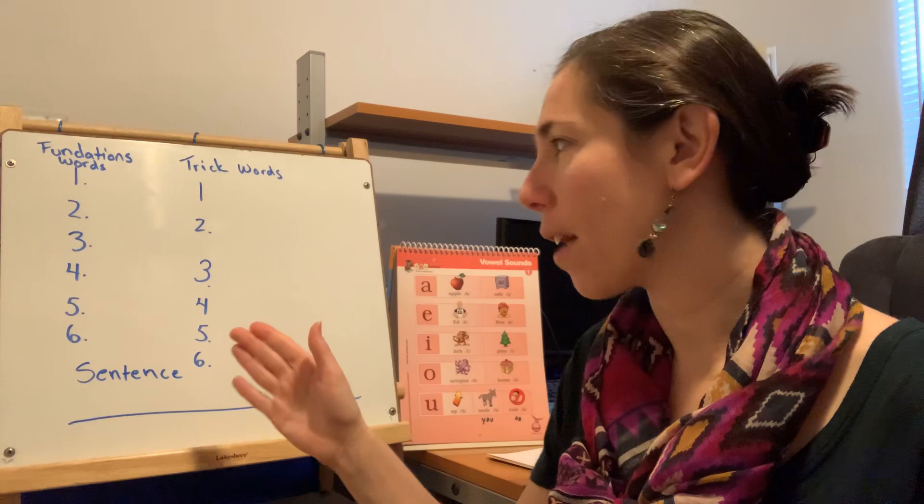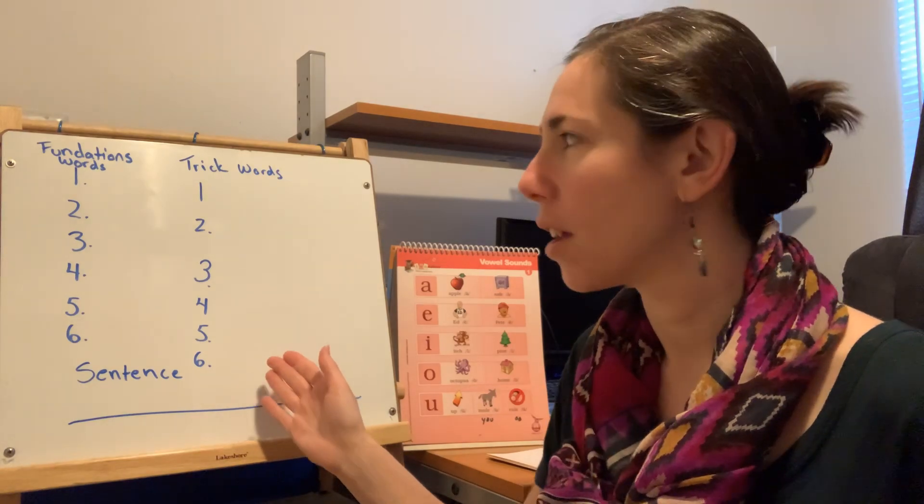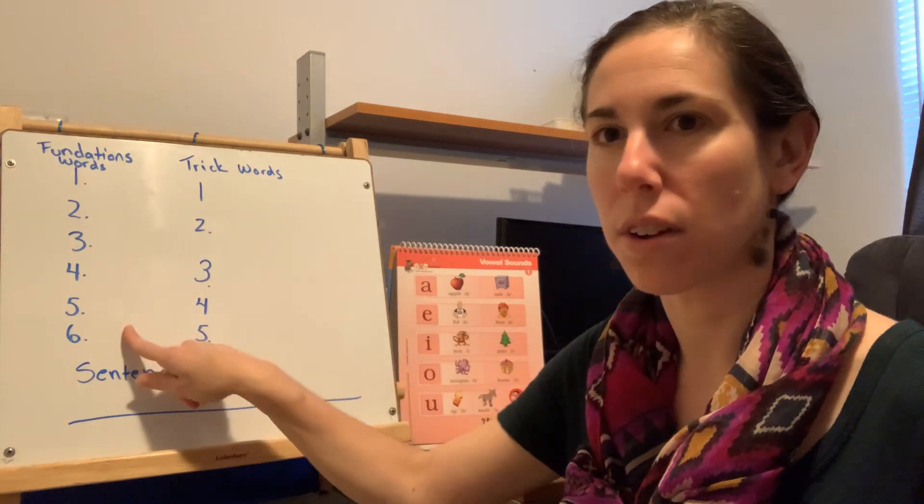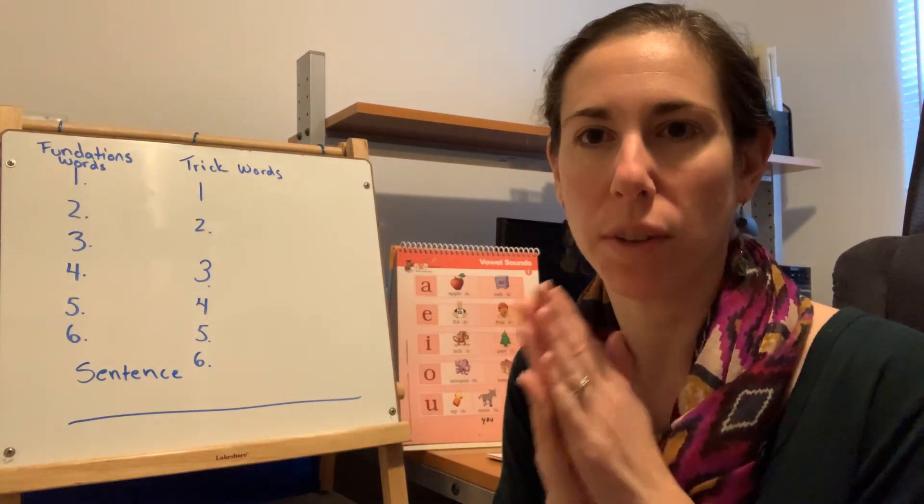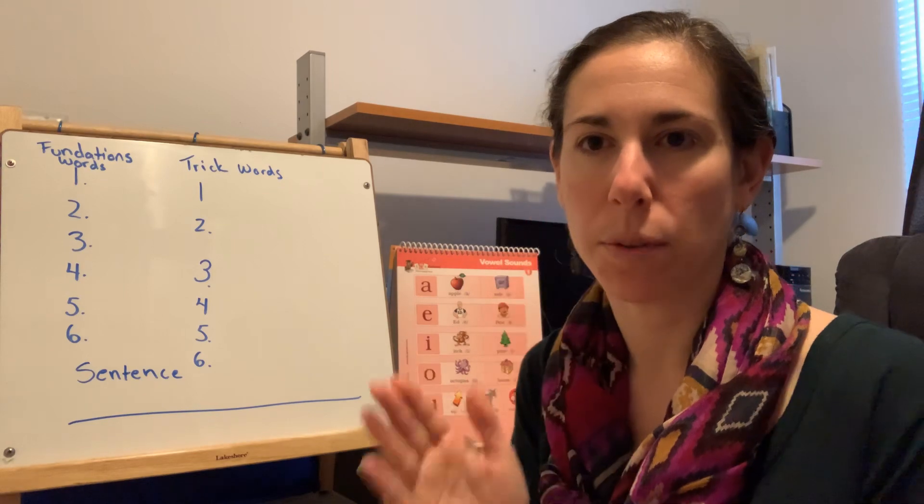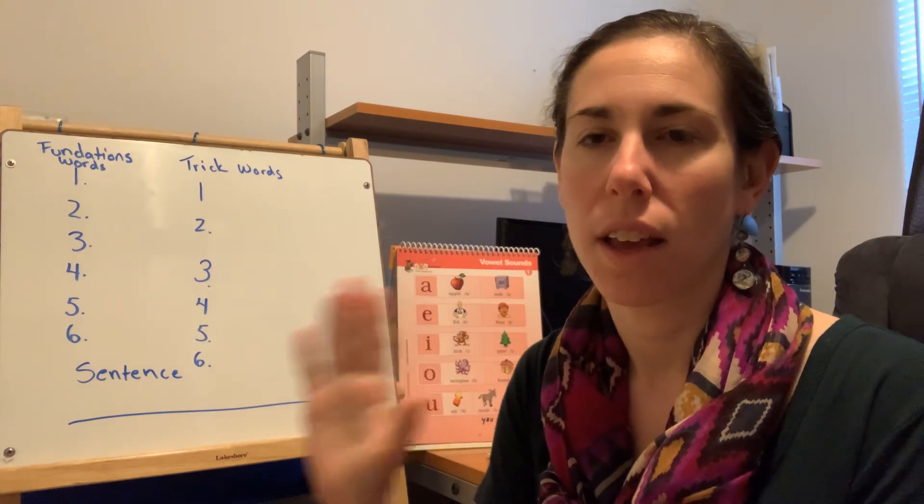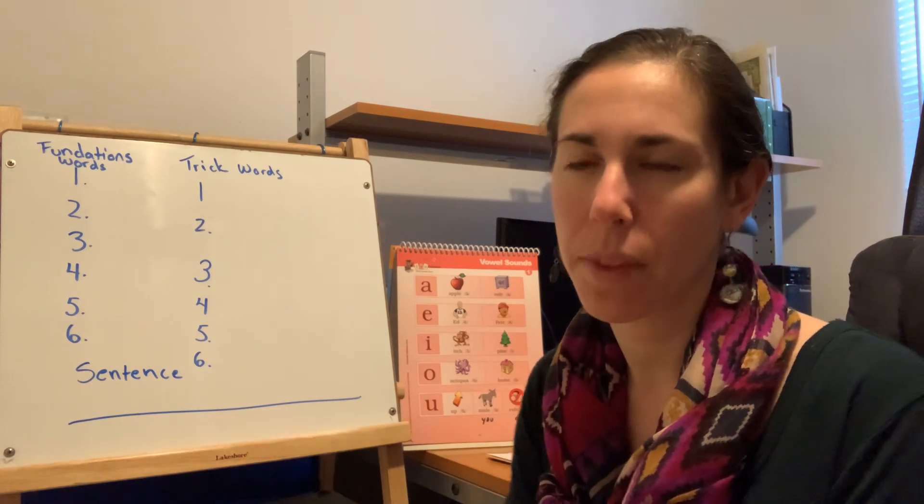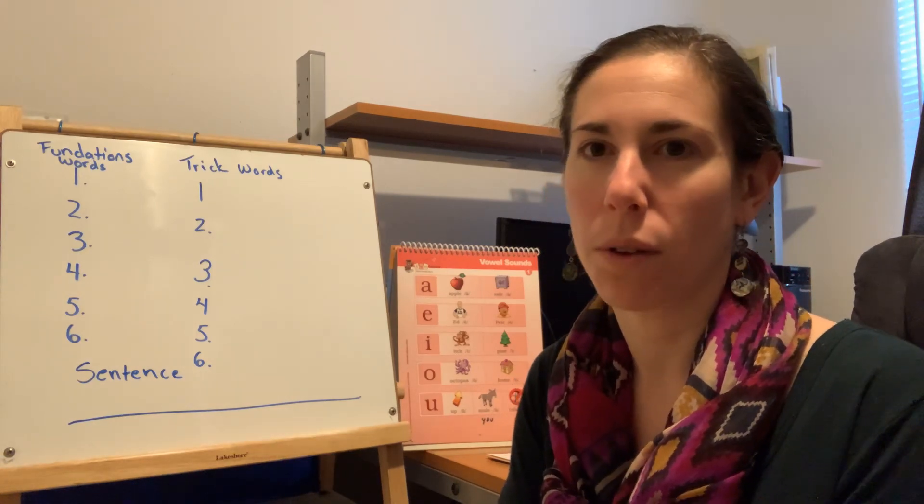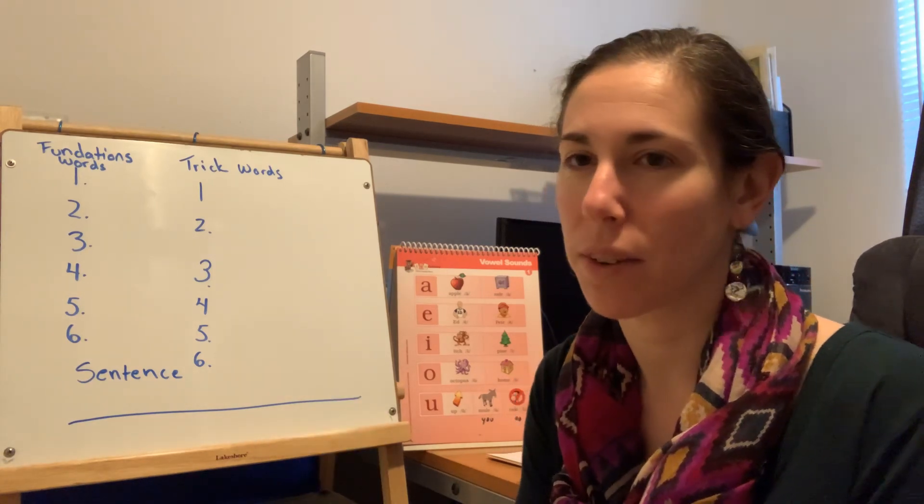Okay, so I have set up my board with foundations words on one side and trick words on the other. You can take a piece of paper and fold it in half, write the numbers one through six on one side, one through six on the other side, and write the sentence on the bottom. Or you can go all the way straight down the paper, whatever is easiest for you.